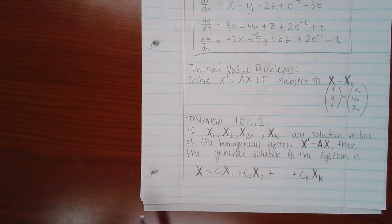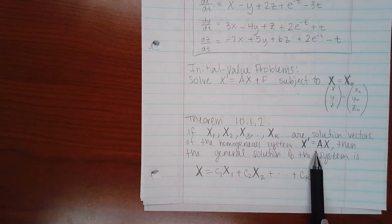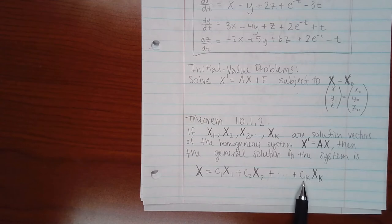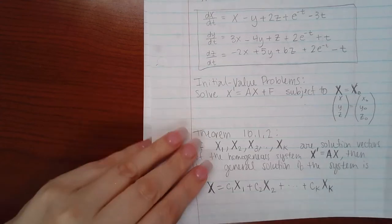Then we have a theorem here. It says if these are all solutions to your system of DE's, then you need to find the general solution by doing one constant times the first solution, plus another constant times the second solution, all the way until you get another constant times the last solution. That's the general form of the solutions.